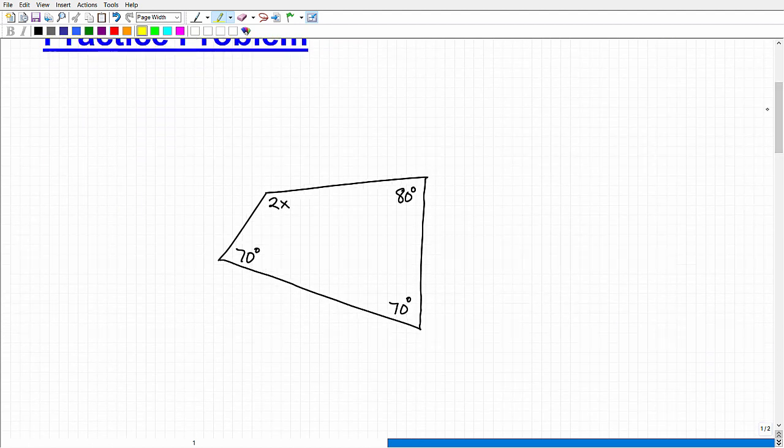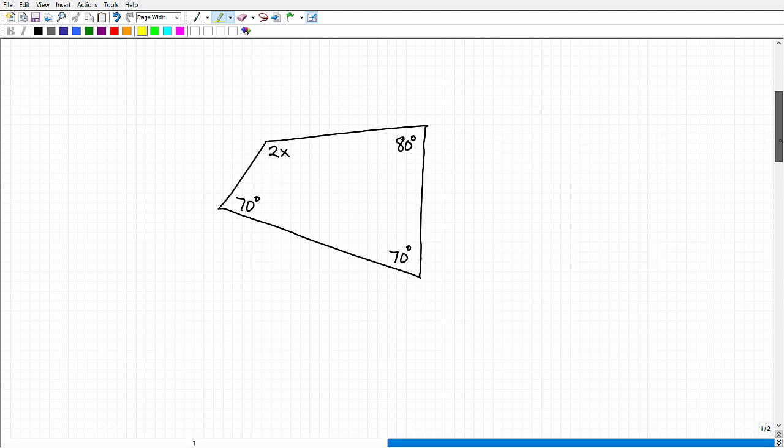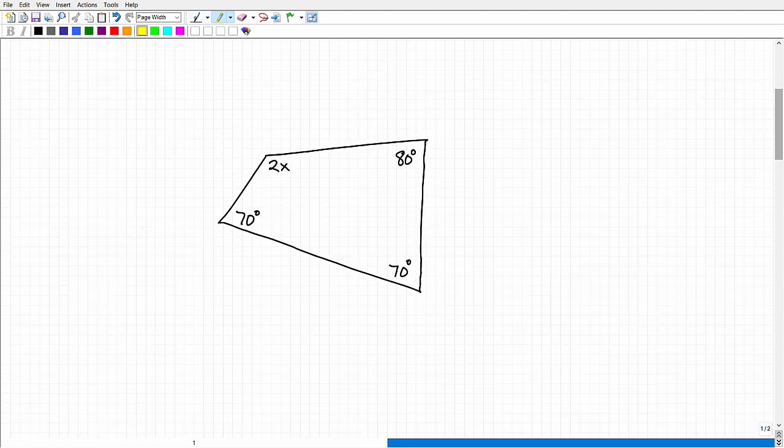You can see here I have some sort of figure, and this is a sketch of a quadrilateral. We have some degrees here: I have 80 degrees, 70 degrees here, 70 degrees here. Then I have an expression 2x. What I'd like you to do is solve for x. Tell me the value of x there.